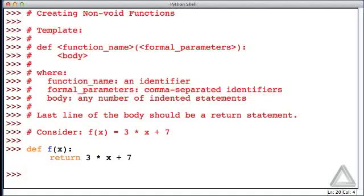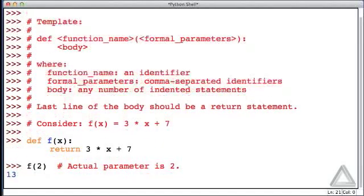To demonstrate the use of the function, let's write its name, open parens, and then we provide the actual parameter. Let's make it the integer value 2—put a note here that the actual parameter is the integer 2. So what happens is we provide the actual parameter when we call or invoke the function. This actual parameter is assigned to the formal parameter, and then the body of the code is executed. When we hit return, 2 is assigned to x, and we get 3 times 2 is 6 plus 7.